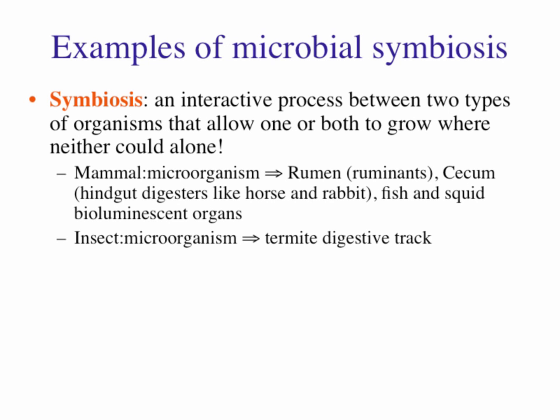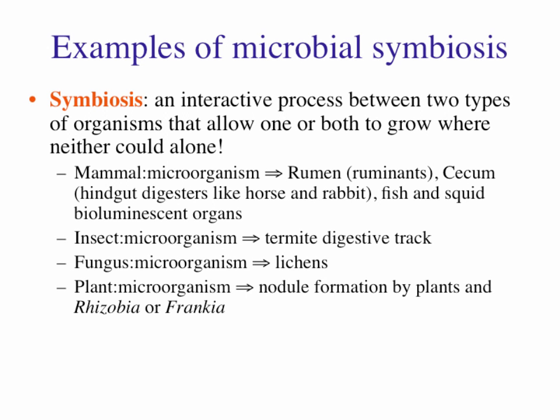We have insects—termites, for example—which have microorganisms in their gut. The bacteria are symbiotic with a protozoan, and the protozoan is in the gut of the termite. It's like a symbiosis of a symbiosis, allowing them to digest the cellulose the termite is eating. Fungi and microorganisms interact to form lichens we see on rocks. We'll also look at how plants and microorganisms form nodules via rhizobia, and how plants and fungi interact in mycorrhizal symbiotic systems.